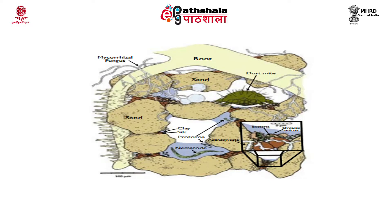Therefore, improving and maintaining existing mycorrhizal populations by increasing soil organic matter content, reducing tillage and other soil disturbance, and eliminating long fallow periods may work best for encouraging mycorrhizal symbiosis in agriculture.